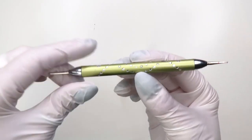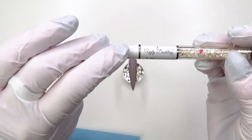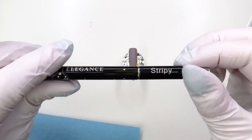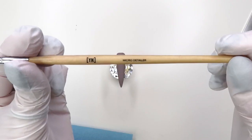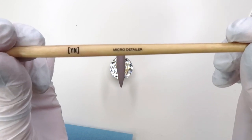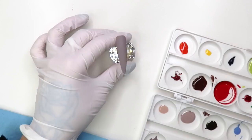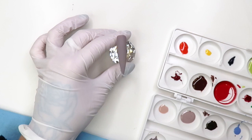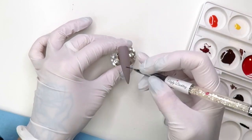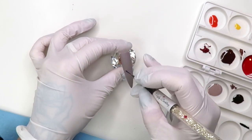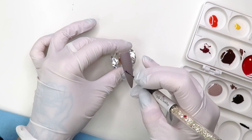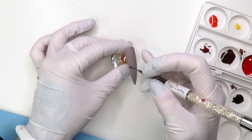I'm using my dotting tool, my Ugly Duckling detailer, my Light Elegance stripy, and my Young Nails micro detailer. So I've already got the number 25 down, I have the matte top coat on it, and I'm just gonna come in and start making the body of this little gnome.